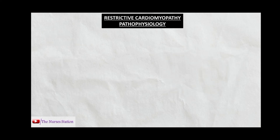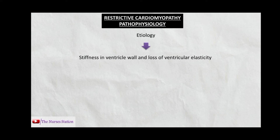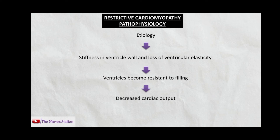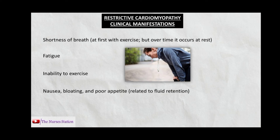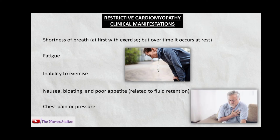Pathophysiology of restrictive cardiomyopathy: etiological factors cause stiffness and loss of elasticity in ventricular walls. The ventricles cannot relax properly during filling, becoming resistant to filling. With less blood in the ventricles at systole, less blood is pumped out, leading to decreased cardiac output. Clinical manifestations include shortness of breath — initially on exertion, then at rest as the condition becomes chronic — fatigue, inability to exercise, nausea, bloating, poor appetite from fluid retention, and chest pain or pressure.